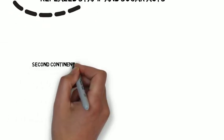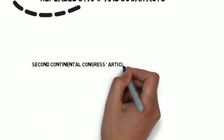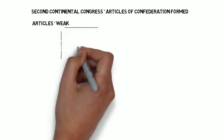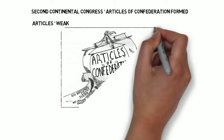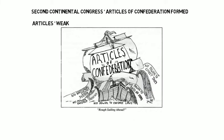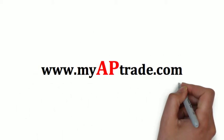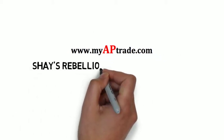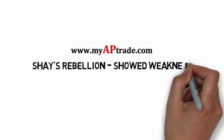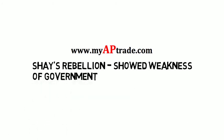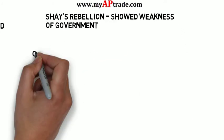During the Second Continental Congress, the first form of government was created — it was called the Articles of Confederation. The Articles were weak because they favored states: Congress couldn't tax or raise funds, causing each state to print its own money, and there was no national army. Shays' Rebellion is important because it shows the weaknesses of the Articles of Confederation. When farmers protested and shut down courts, the government couldn't do anything because there was no military to stop the rebellion.